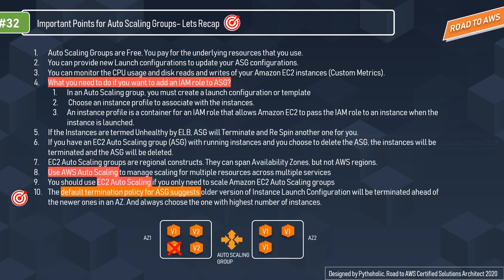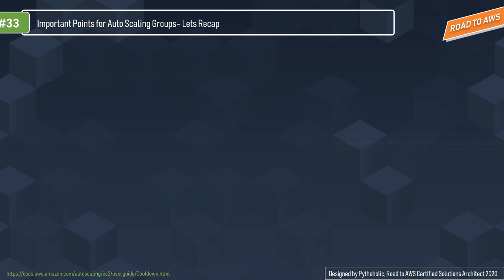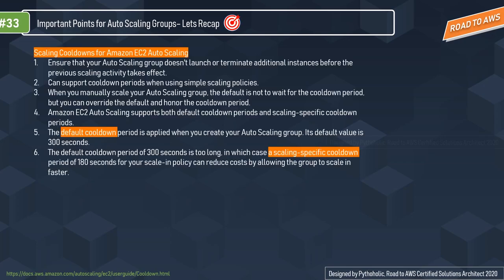Scaling cooldowns ensure your auto scaling group doesn't launch or terminate additional instances before the previous scaling activity completes. You can configure the cooldown length based on your instance warm-up period. There are two types of scaling: simple scaling and step scaling. Simple scaling waits for the cooldown period (e.g., 180 or 300 seconds) before resuming scaling. Step scaling increases or decreases capacity based on a set of step adjustments.